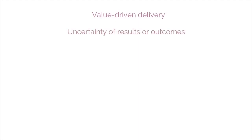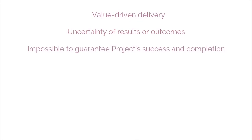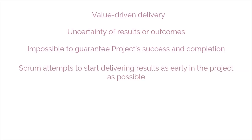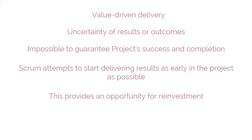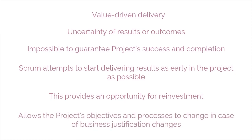One of the key characteristics of any project is the uncertainty of results or outcomes. It is impossible to guarantee project success at completion, regardless of the size or complexity of a project. Considering this uncertainty, Scrum attempts to start delivering results as early in the project as possible. This early delivery of results, and thereby value, provides an opportunity for reinvestment and proves the worth of the project to interested stakeholders. Furthermore, Scrum's adaptability allows the project's objectives and processes to change if its business justification changes. Although the product owner is primarily responsible for business justification, other team members also contribute significantly.